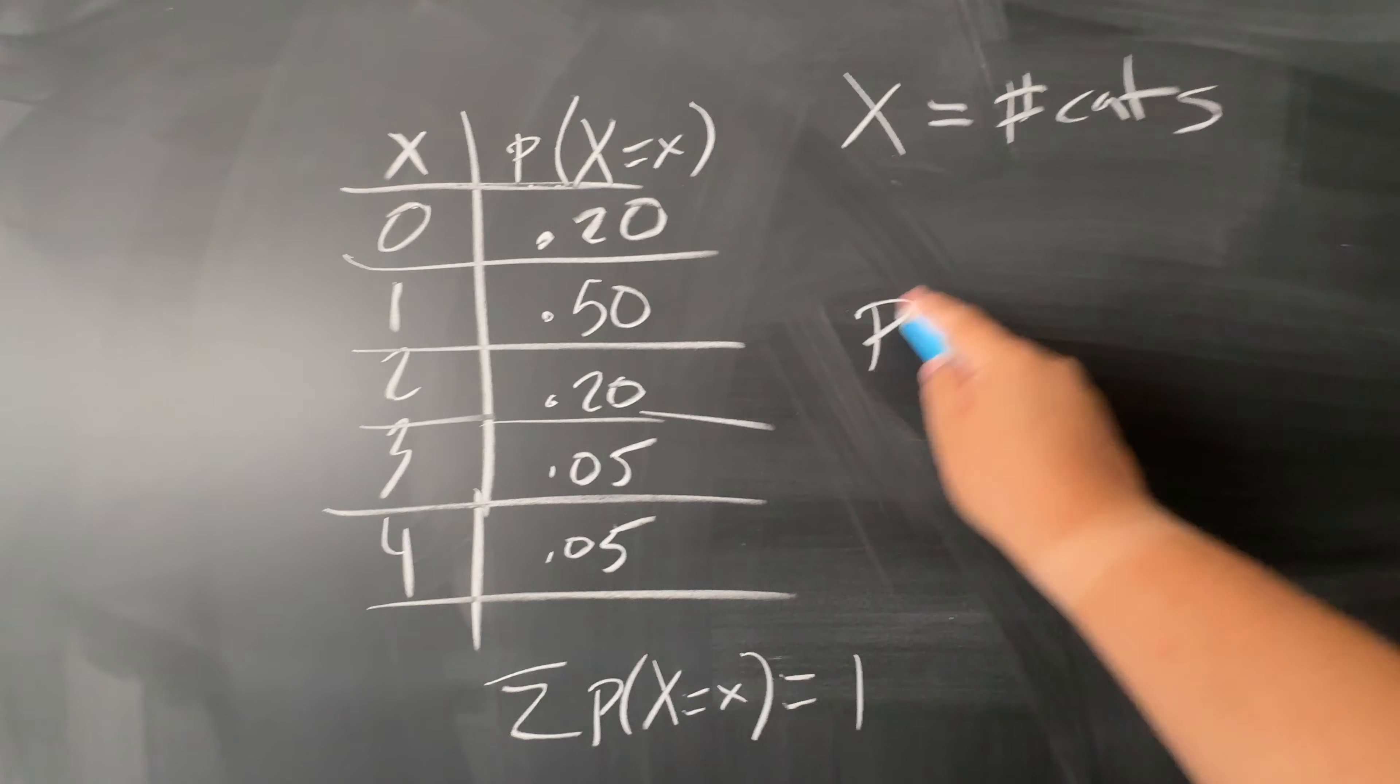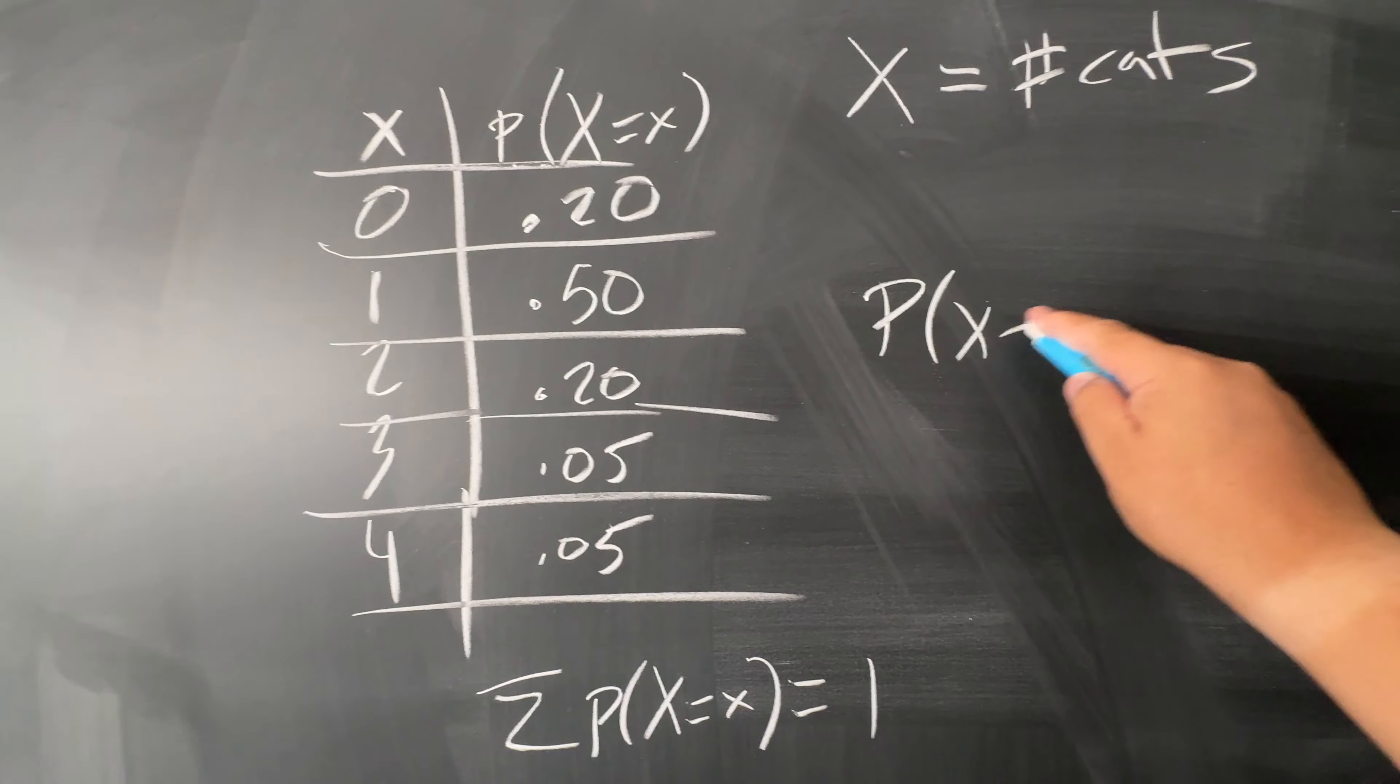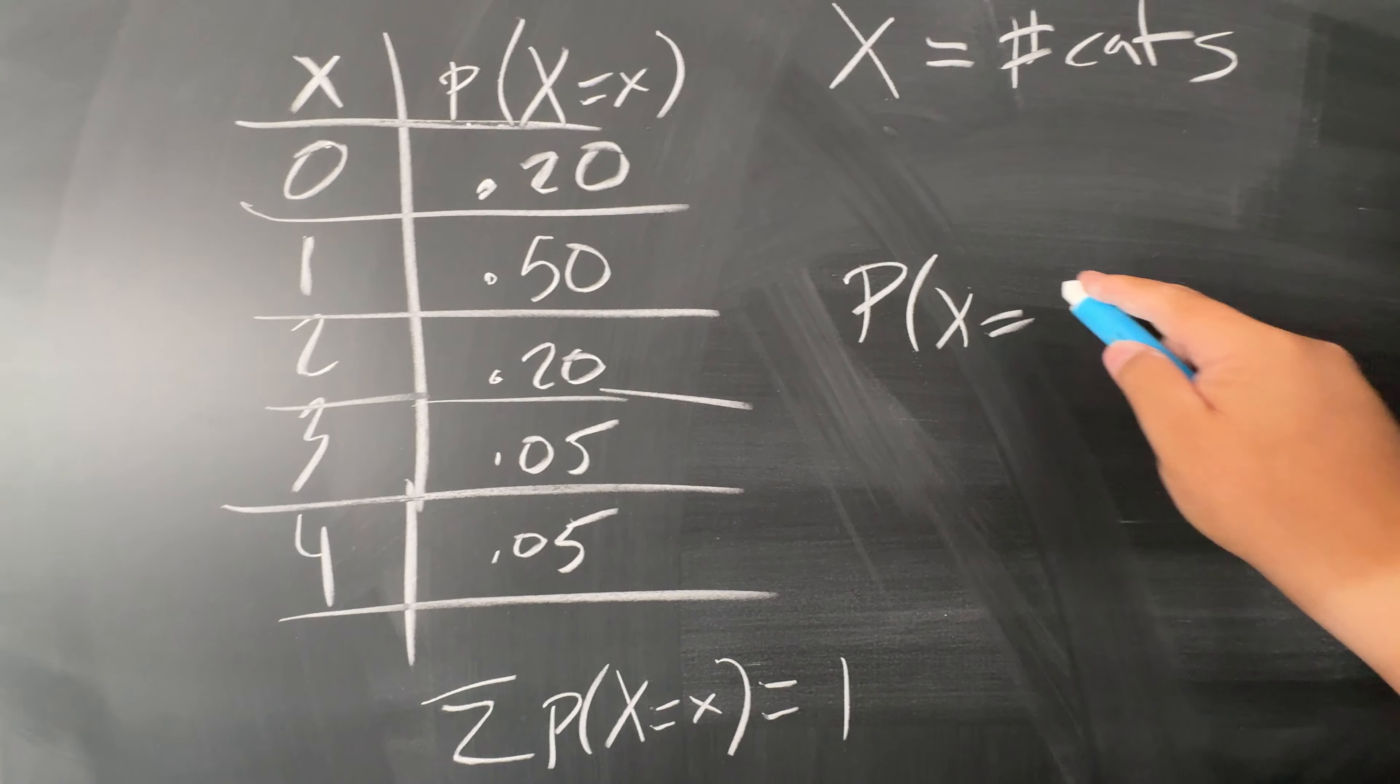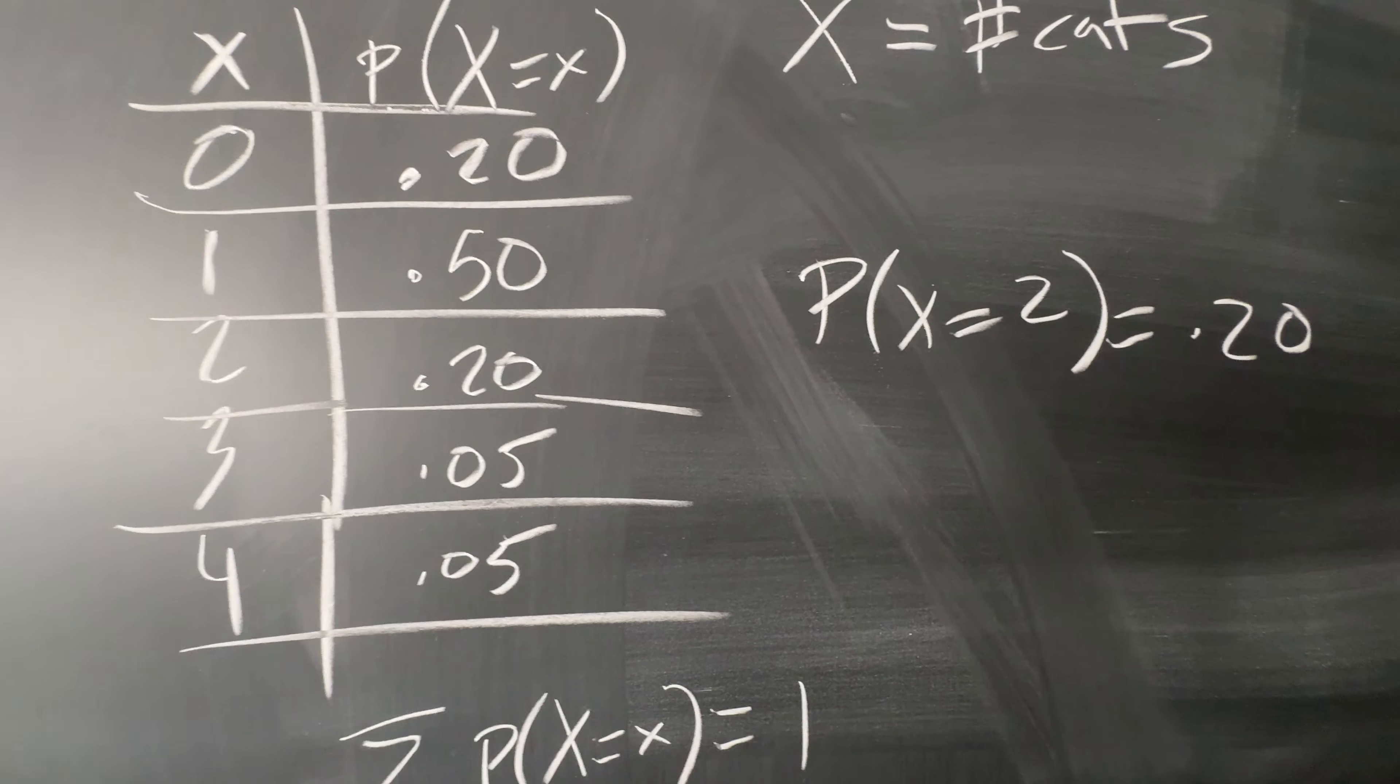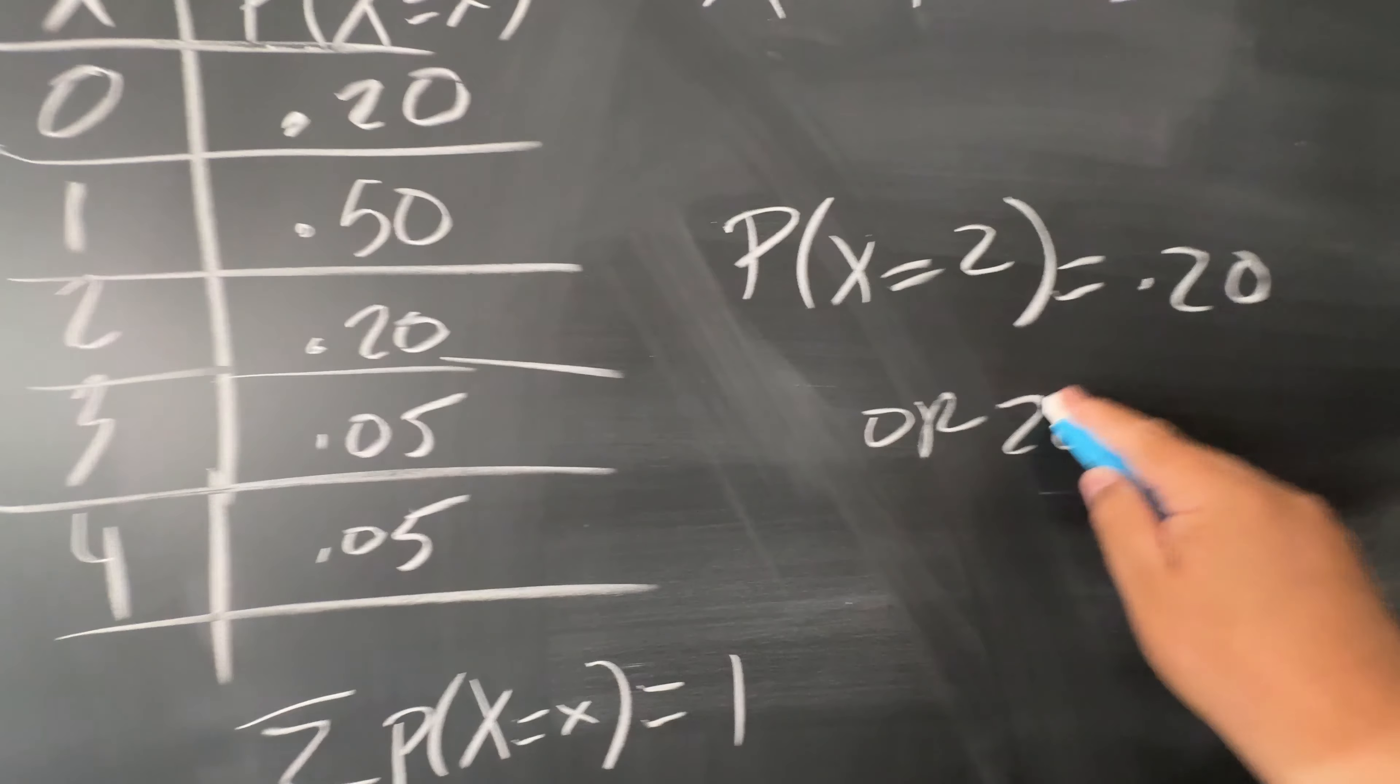So, now you can do something like, what's the probability that at random you choose a person that has two cats, and you would say 0.20 or 20%.